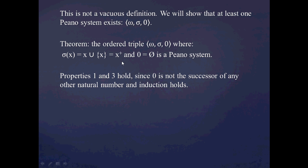And this is quite easy to prove. Properties 1 and 3 — first, that zero is not the successor of anything, we've already shown that. And property 3, the way we've just defined it, essentially gets translated into the statement that mathematical induction holds on omega, which indeed it does. So properties 1 and 3 are pretty much already shown.